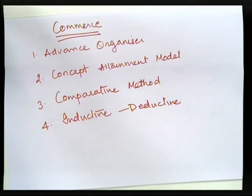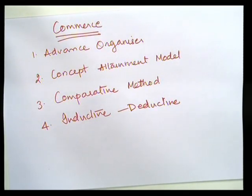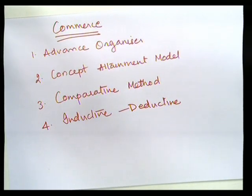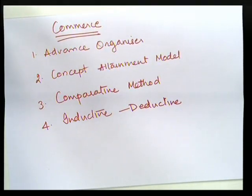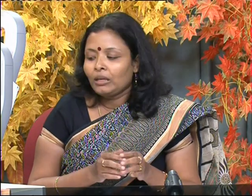The second is concept attainment model. That is something where you gather information from all around and come to a certain conclusion — yes, this is the concept. For an example, if you are teaching warehousing in commerce, you ask them to collect information about what you do with goods, where do you keep the goods, and what things are to be kept in mind when you store goods. Everything they do, and ultimately they come to the concept that this is known as warehousing.